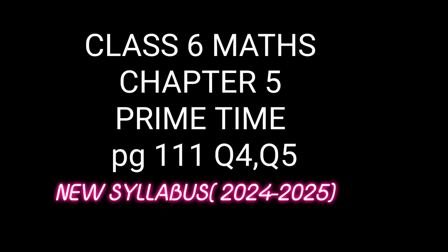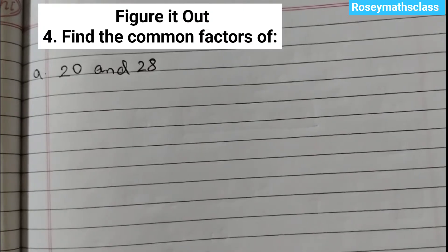Hello students, today we shall discuss question number 4 and question number 5 of chapter 5 Prime Time, that's the new math syllabus. Find the common factors of, first one is 20 and 28.